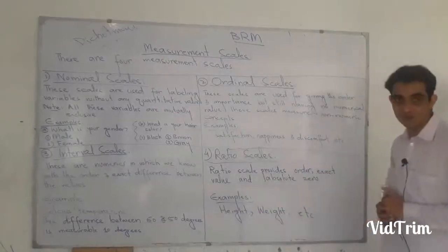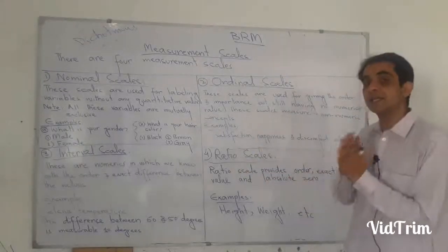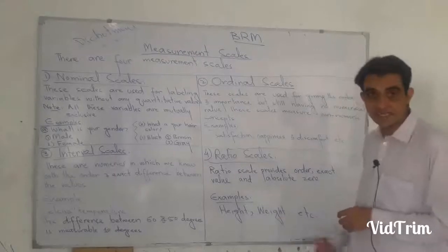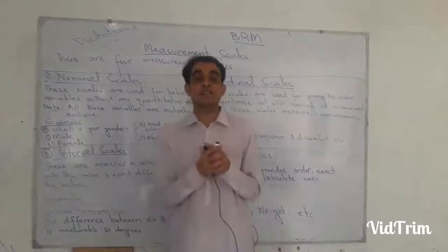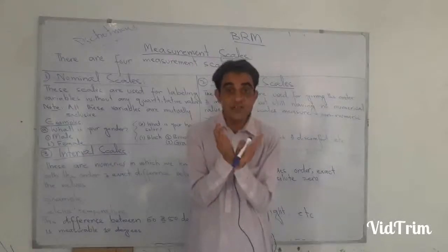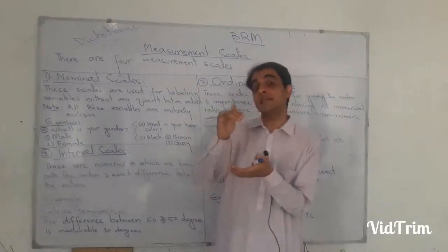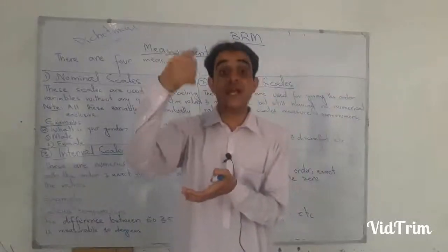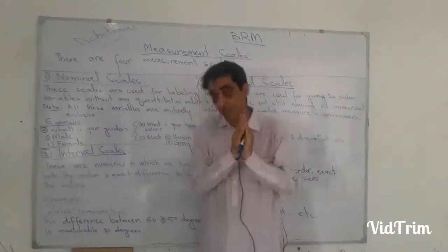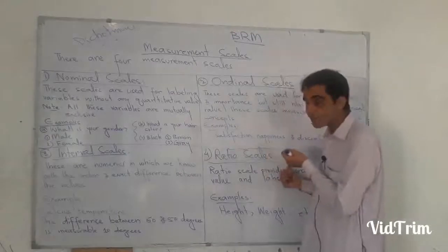The final scale is ratio scale. Ratio scale provides order and exact value, and in addition has an absolute zero — starting from zero. For example, height and weight. In weight, if one student is 70 kg and another is 80 kg, these measurements start from 0 kg. We can state someone is 70 kg or 90 kg because we start from zero. Without an absolute zero, you would not be able to measure in this way. This is called ratio scale.